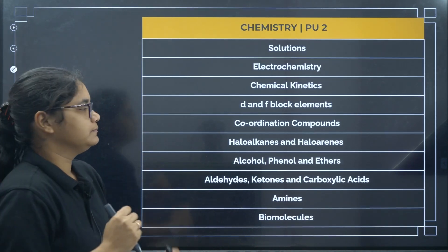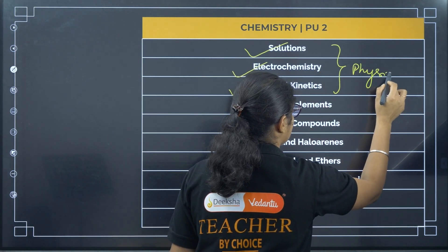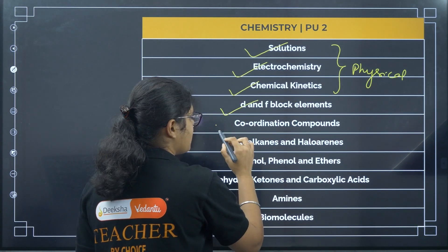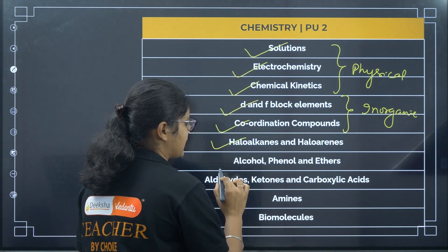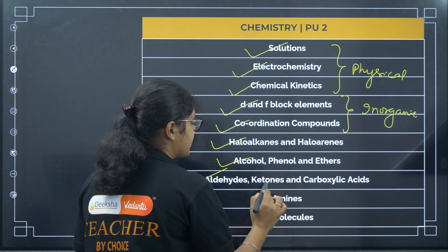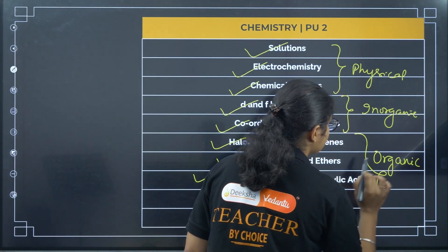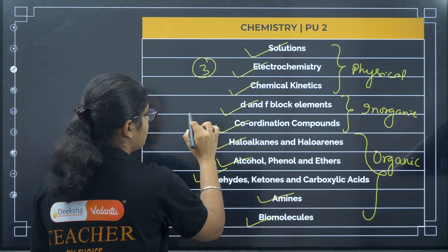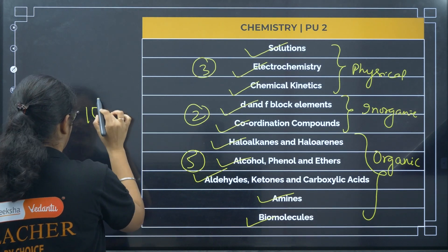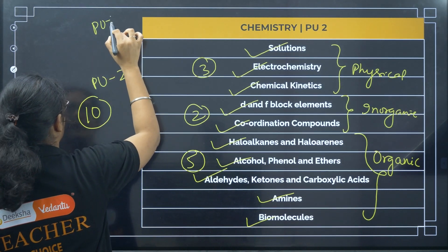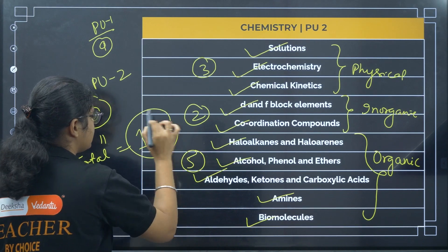Coming to Chemistry PU2, the first chapter is Solutions, second Electrochemistry, third Kinetics — these three are from physical chemistry. Fourth is D&F Block, fifth Coordination Compounds from inorganic chemistry. Then from organic chemistry: Haloalkanes and Haloarenes, Alcohols Phenols and Ethers, Aldehydes Ketones and Carboxylic Acids, Amines, and Biomolecules. So PU2 has 10 chapters and PU1 has nine chapters, making a total of 19 chapters in chemistry.